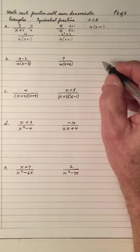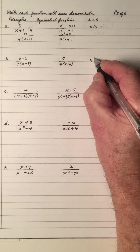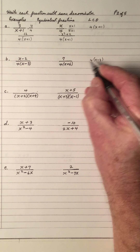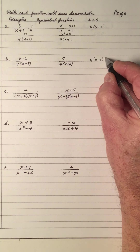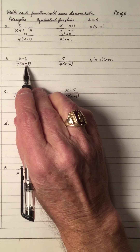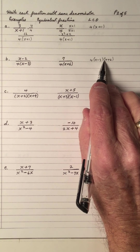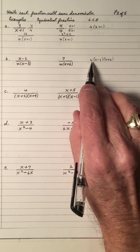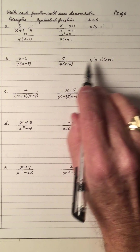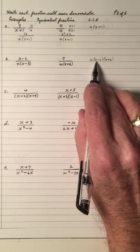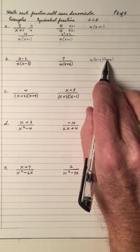What's the LCD? I need a 4, I need an x minus 3, and I need an x plus 6. How do I know? Well, 4 is there, x minus 3 is there — so this denominator is in here. And 4 is there, and x plus 6 is there — so this denominator is here. So that's the LCD.